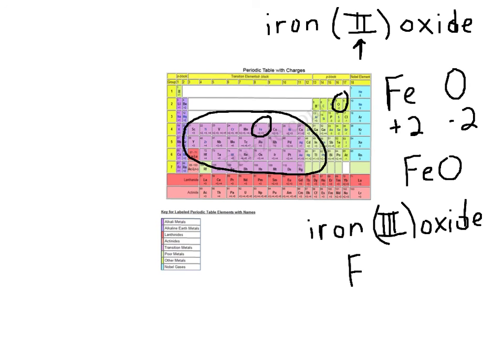If iron has a +3 charge and oxide has a -2 charge, it's going to take 2 irons to balance 3 oxides.